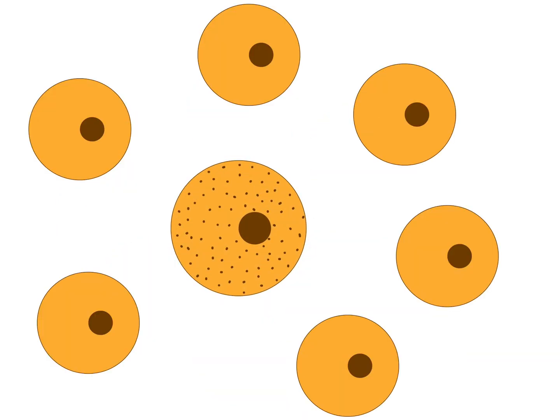In parallel, it gives off inhibitory signals to its neighboring cells which prevent them from differentiating in a dominant way. Instead, they are in a position to differentiate only as secondary cell types.